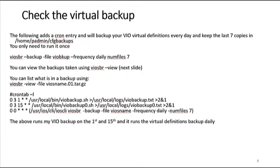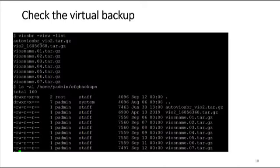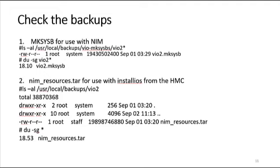The VIOSBR with the num_files setting creates virtual definition backups. You can check what's in there by using the VIOSBR dash view command, or by doing an LS on the directory /home/padmin/config_backups. You only run that VIOSBR command once, and from then on it puts a cron job in that runs every day. When you check the backups, you'll see VIOSname.01 through .07 as those automated backups. You also want to verify your backups — I have my mksysb backups going to a directory called VIO-mksysbs, so I can do an LS and a DU to make sure the backup is really where I expect it to be.